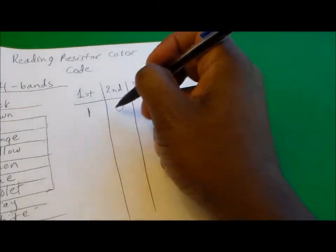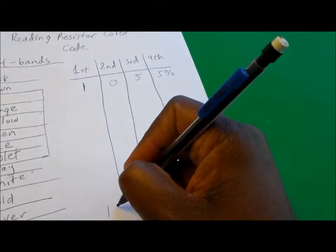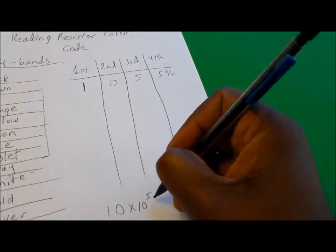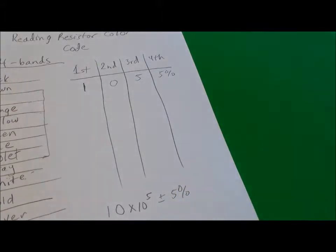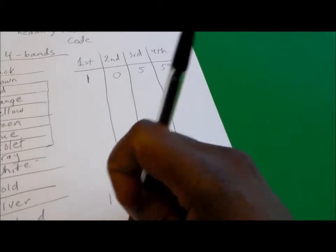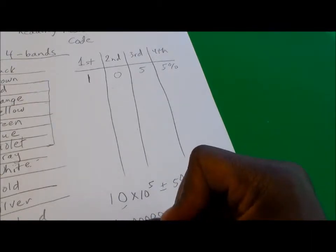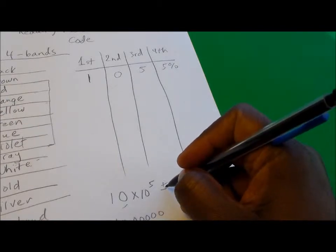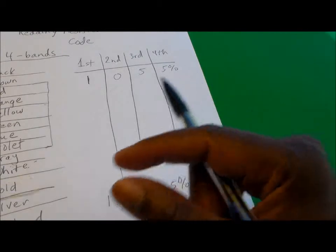What this says to us is that this resistor is a one. You take the number from the first column which is one, the number from the second column which is zero, and multiply that by 10 raised to the fifth power, and it has a tolerance range of plus or minus 5 percent. When we calculate this out, this is 1-0 with five more zeros: 1-2-3-4-5, which makes this a 1 megaohm resistor with a plus or minus 5 percent tolerance.